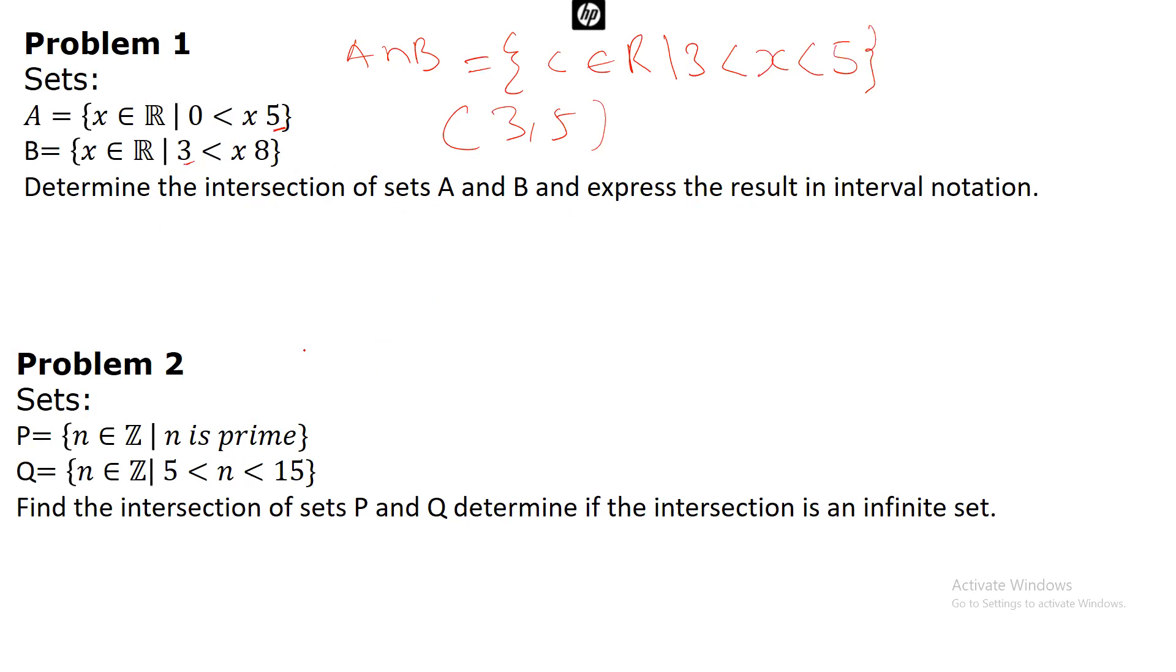Problem two, P intersection Q is a set of prime numbers between 5 and 15. From this expression, the intersection is finite, as there are finite numbers of prime numbers in this range. So I think this is very, very key.